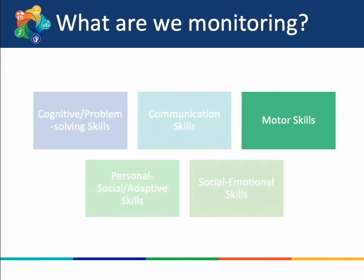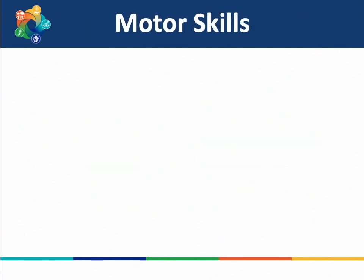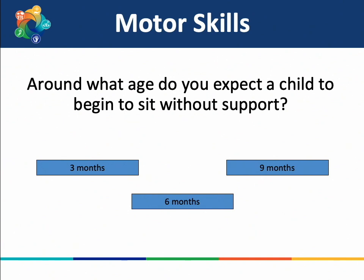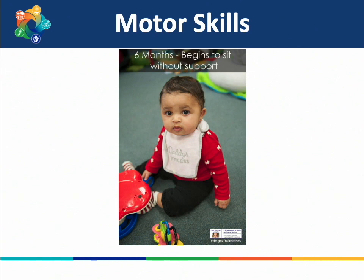Before moving on, let's jump back to our game on motor skills. Remember, motor skills are how a child moves his or her body — gross motor skills are big movement skills and fine motor skills are little movement skills. Around what age do you expect a child to begin sitting without support? Our options are 3 months, 6 months, or 9 months. The answer is 6 months, as we can see with this little 6-month-old girl beginning to sit without support on the floor.